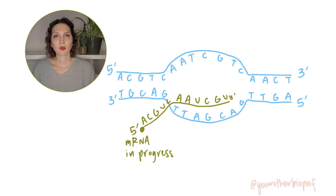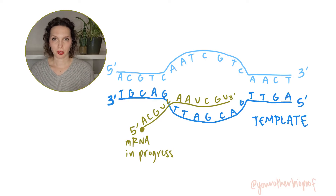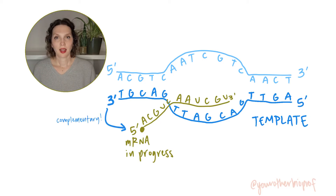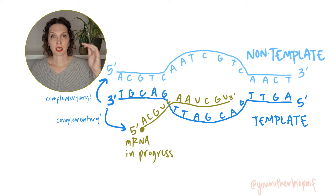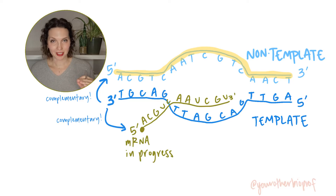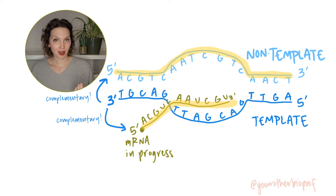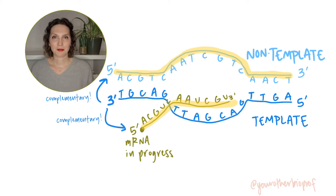We've got our two strands of DNA, and one of those DNA strands will be the template strand — that is the strand that will be used in building our complementary RNA. The template DNA strand is also complementary to the other DNA strand, the non-template. So if the template strand is complementary to the non-template DNA strand, and the template DNA strand is also complementary to the RNA we will be producing, that means the non-template strand and the RNA strand have the same sequence.